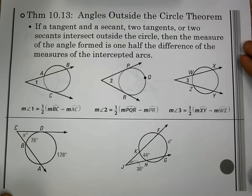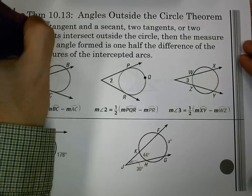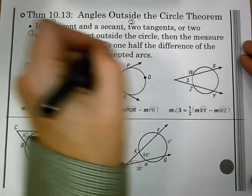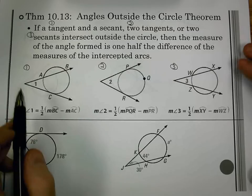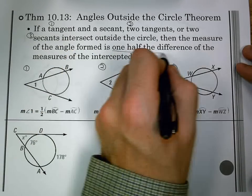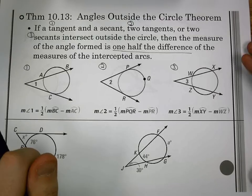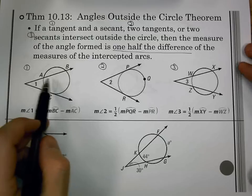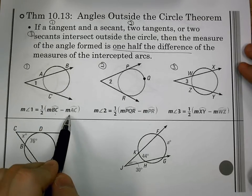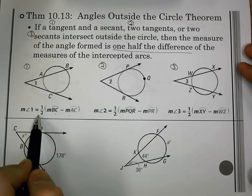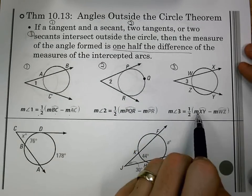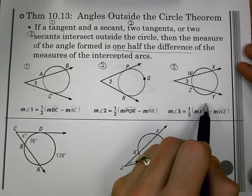The last one we have is angles outside the circle. Here we have three scenarios. We have a tangent and a secant, that's this case, two tangents, that's this case, or two secants, which is this case. They all work the same way, but now notice the angles on the outside. So what it says is, the measure of the angle formed is one-half the difference of the intercepted arcs. So before we took half the sum, now we're taking half the difference. So in the first one, I have AC and BC as my arcs. I'm going to take BC subtract AC. This arc minus this arc, divide by 2. In this one, I take PQR minus PR divided by 2 to get the angle. In the last one, I take XY minus WZ divided by 2 and find the angle.